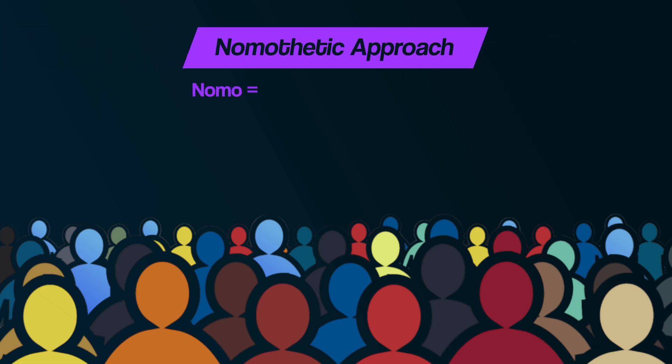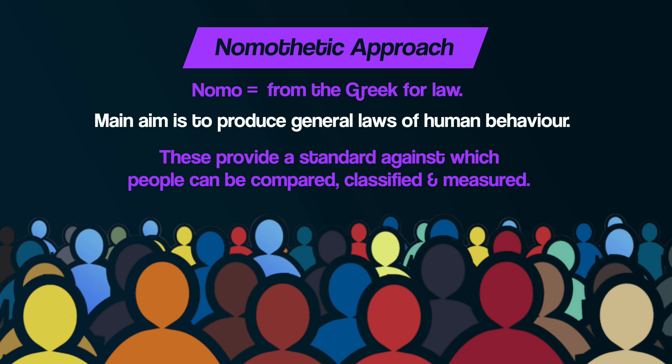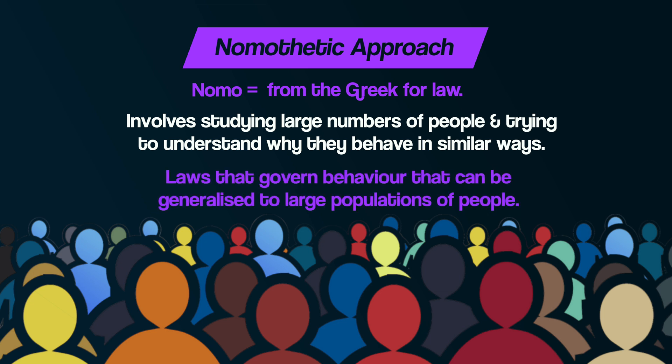The word 'nomo' comes from the Greek word for law. The main aim of the nomothetic approach is to produce general laws of human behaviour. These provide a standard, or benchmark, against which people can be compared, classified, and measured. It involves studying large numbers of people and trying to understand why they behave in similar ways in certain situations. These similarities lead to laws that govern behaviour that can be generalised to large populations of people.